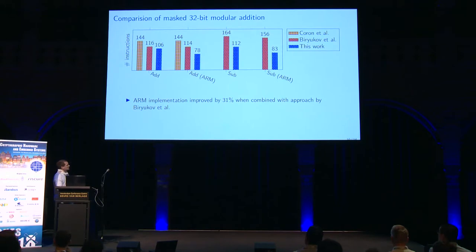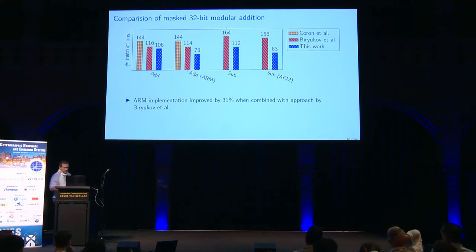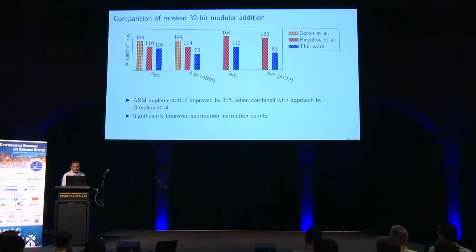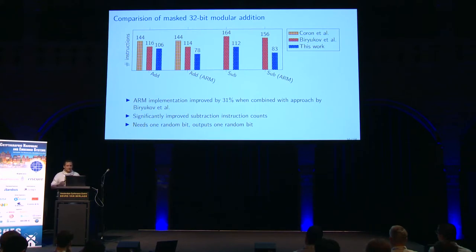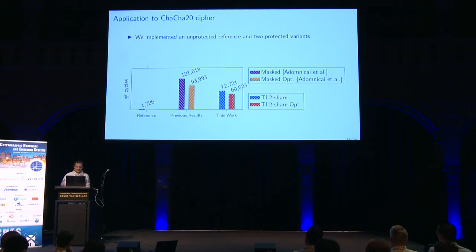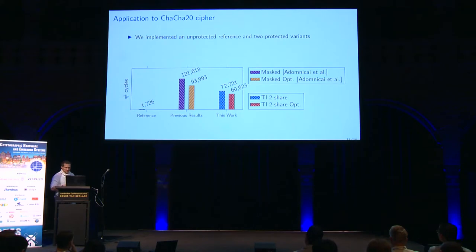Our subtraction algorithm, which I haven't mentioned yet, is even faster. To reiterate, our complete addition algorithm only needs a single random bit and also outputs a single random bit. So we can implement, for example, the ChaCha cipher, where each modular addition will produce the next random bit for the next addition.